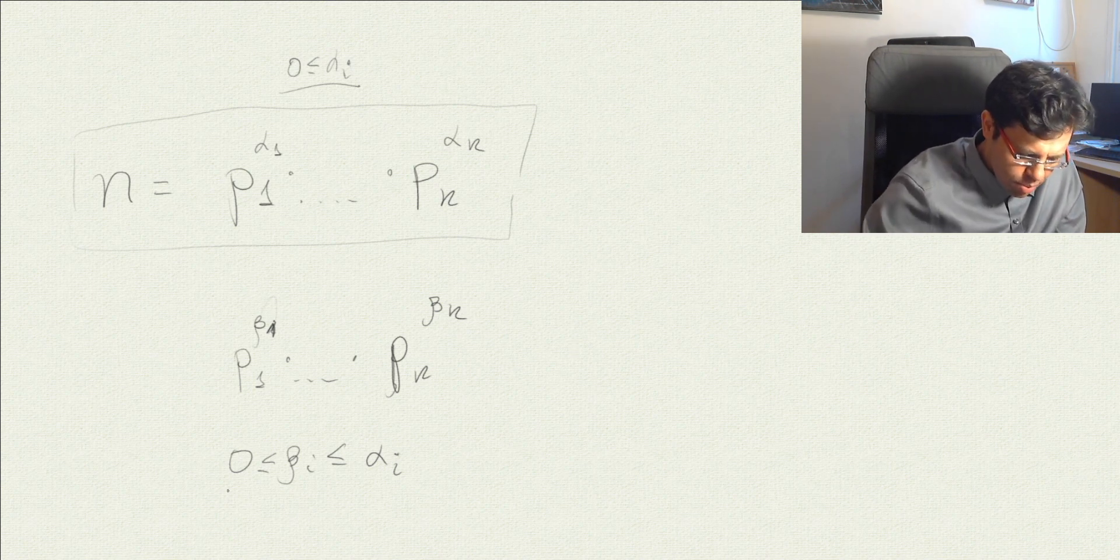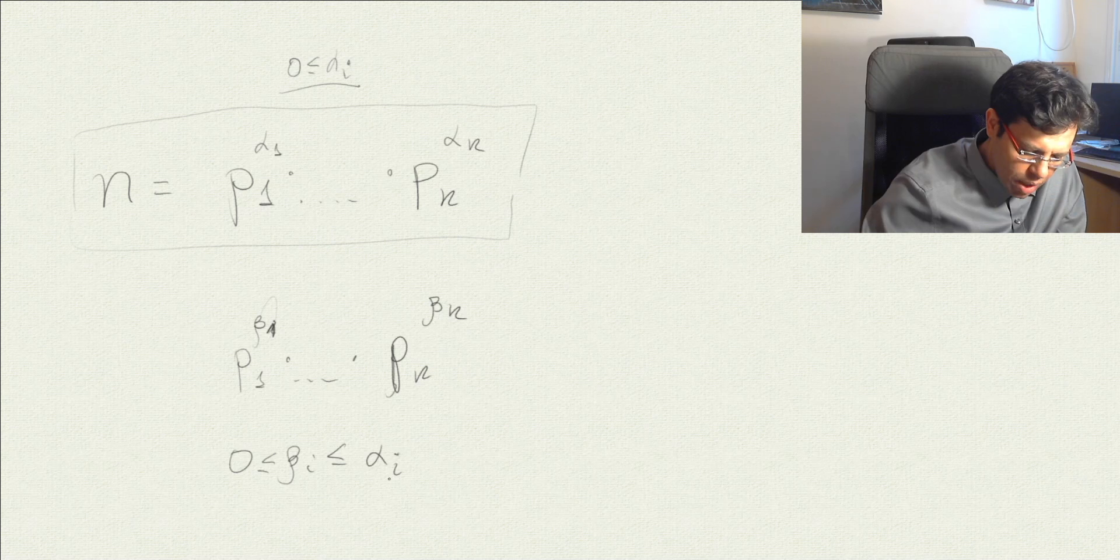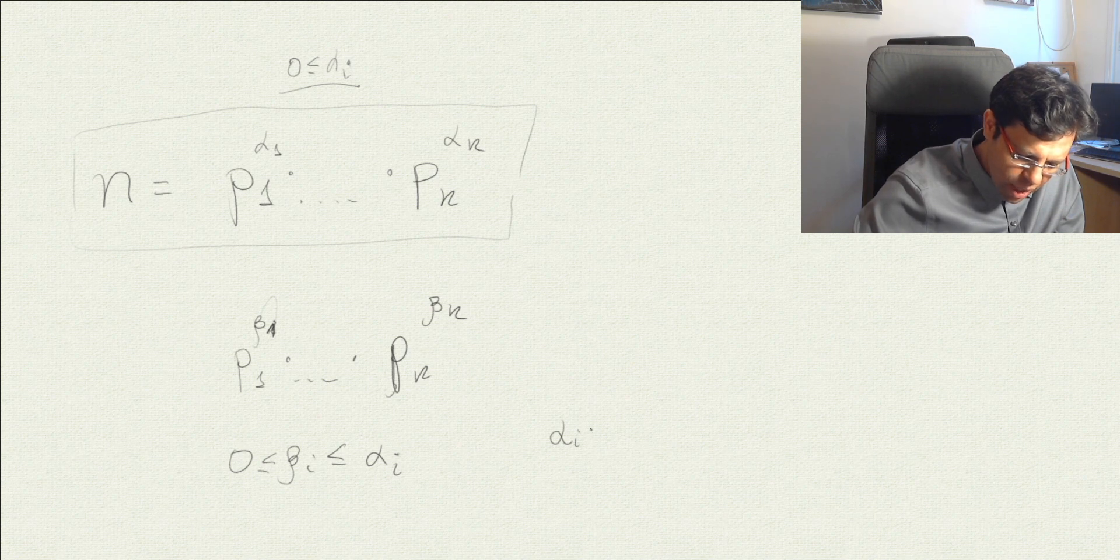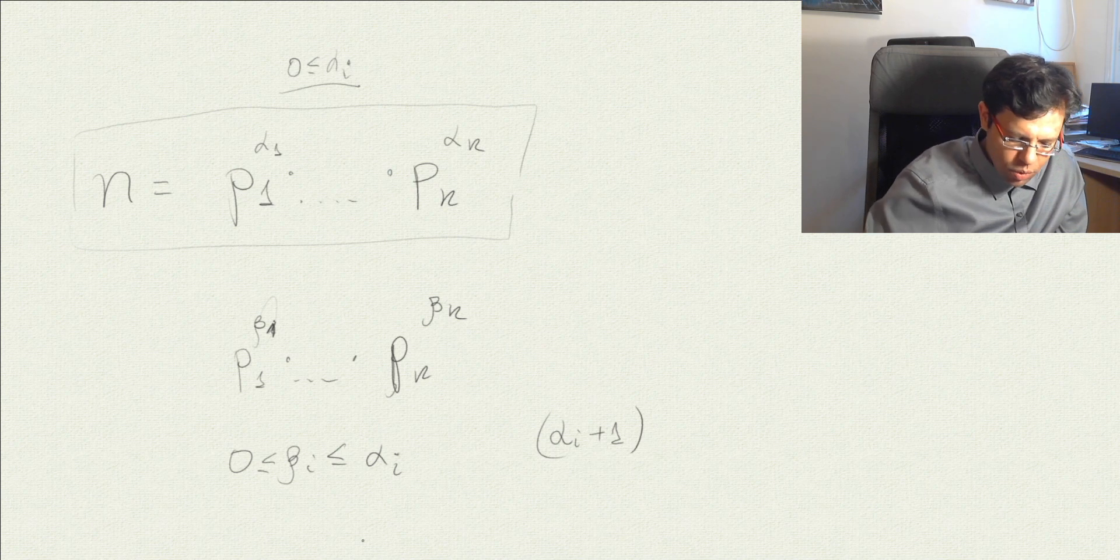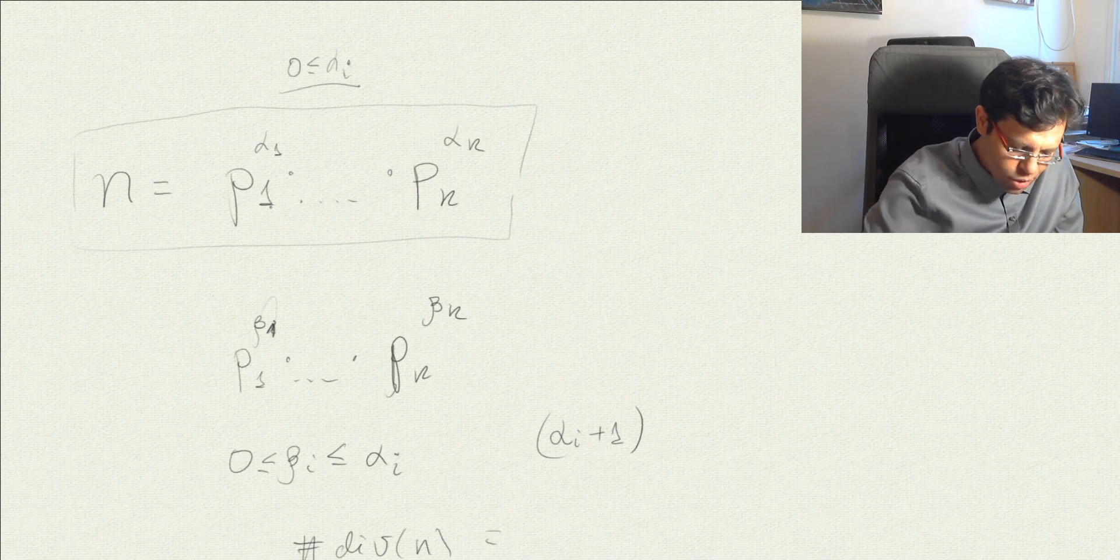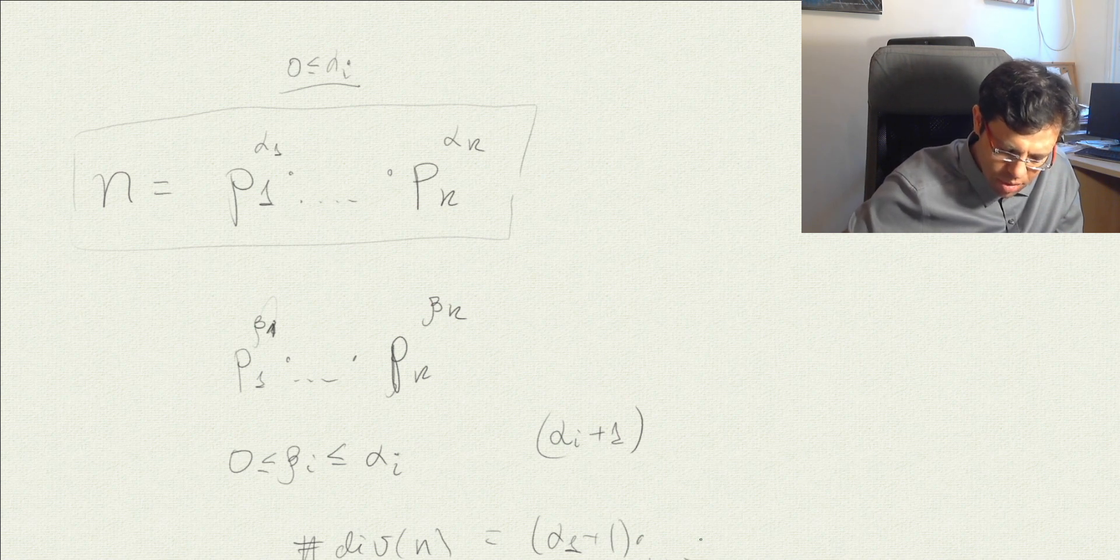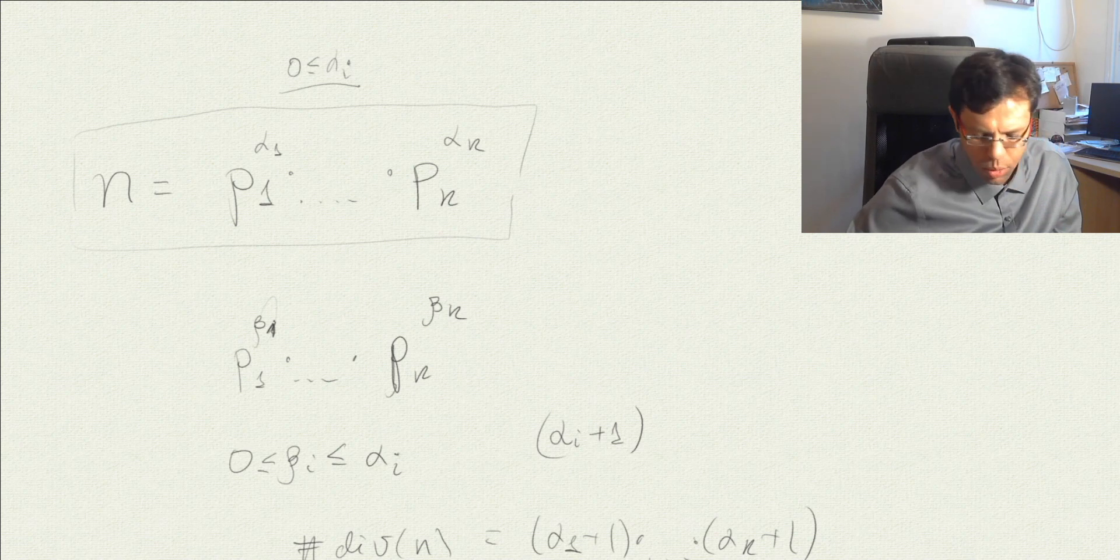Each beta i can be either 0 or alpha i. Counting from 0 up to alpha i, beta i has alpha i plus 1 options. This holds for every beta. So the number of divisors of n is actually, if n is of this form, the product of alpha 1 plus 1 times alpha k plus 1. This is the number of divisors. We want this to be an odd number.